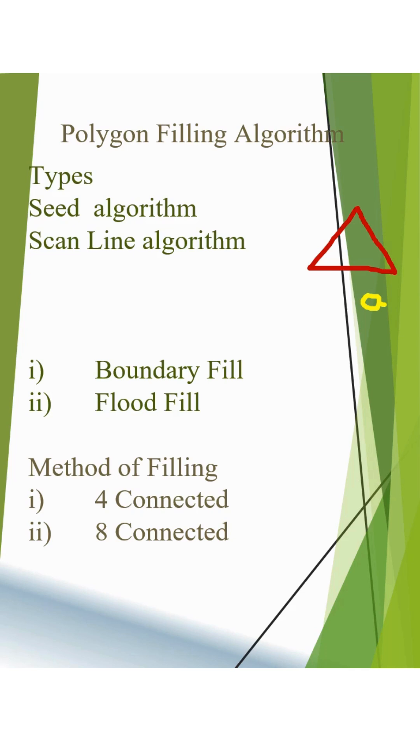If these conditions are satisfied, it will check whether the seed is inside the polygon or not. If all conditions are met, then it will fill the seed with the chosen color.